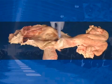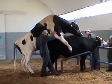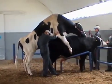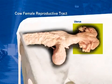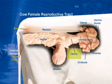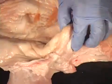connects the vulva with the cervix. At natural service, it receives the penis of the male. Uterus, also known as the womb: it offers shelter to the fetus until the calving moment.